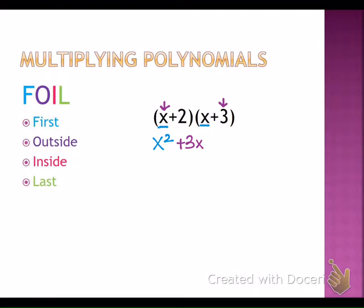The I stands for the inside terms — maybe you heard it called the inner terms last year. The inside terms are 2 and x, so when I multiply 2 and x, I get positive 2x. And then lastly, the letter L stands for the last terms. The last terms in each set of parentheses are the 2 and the 3, and when you multiply 2 and 3, you get positive 6.